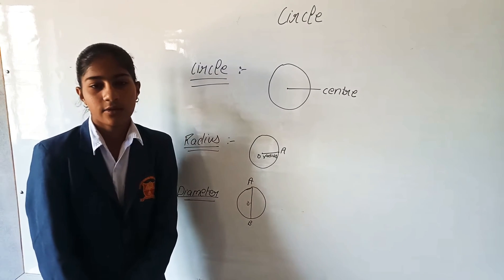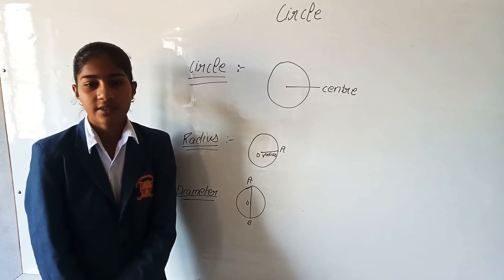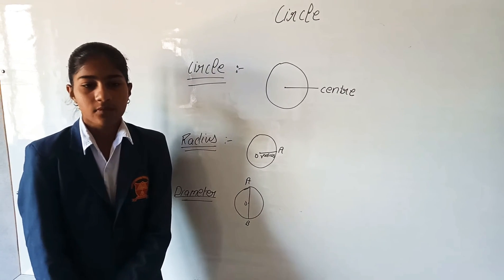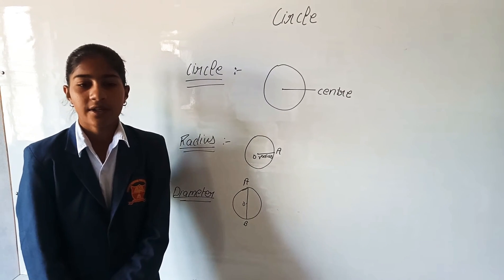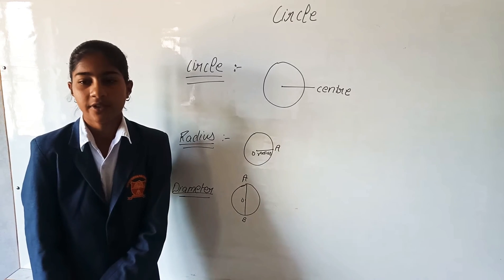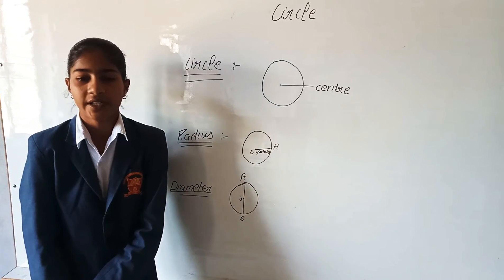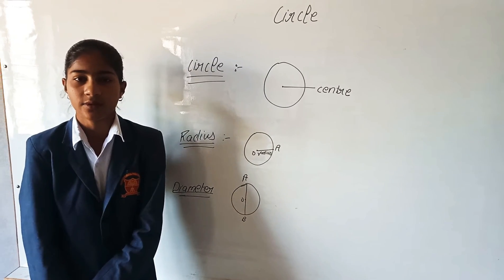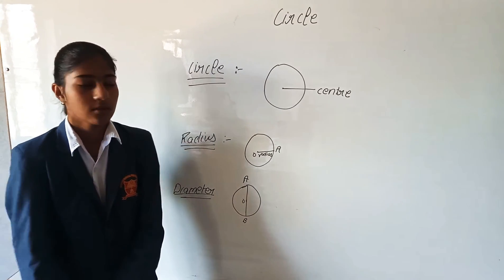Next is chord. What is a chord? A chord is a line that intersects the circle at two different points but does not pass through the center.